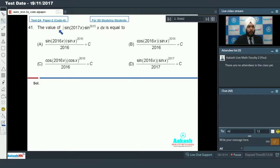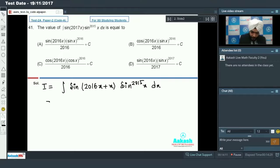Question number 41: The value of integral sin 2017x into sin raised to power 2015x dx is equal to what? If we look at the question with sin 2017 and 2015, we have to use one number as 20, so we will write it as 2016 plus 1. This particular integral will be sin of 2016x plus x into sin power 2015x dx. Now applying sin of a plus b formula: sin a cos b plus cos a sin b.